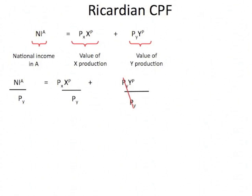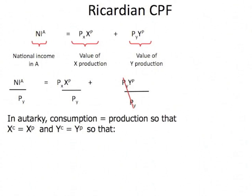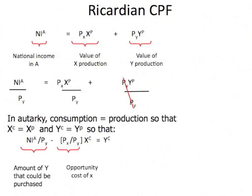Now, one thing in an autarky situation: the amount that you consume, Xc, must be equal to the amount that's produced, XP — and analogously for the Y sector. So when we have this autarky situation, we can take a look at the national income line.